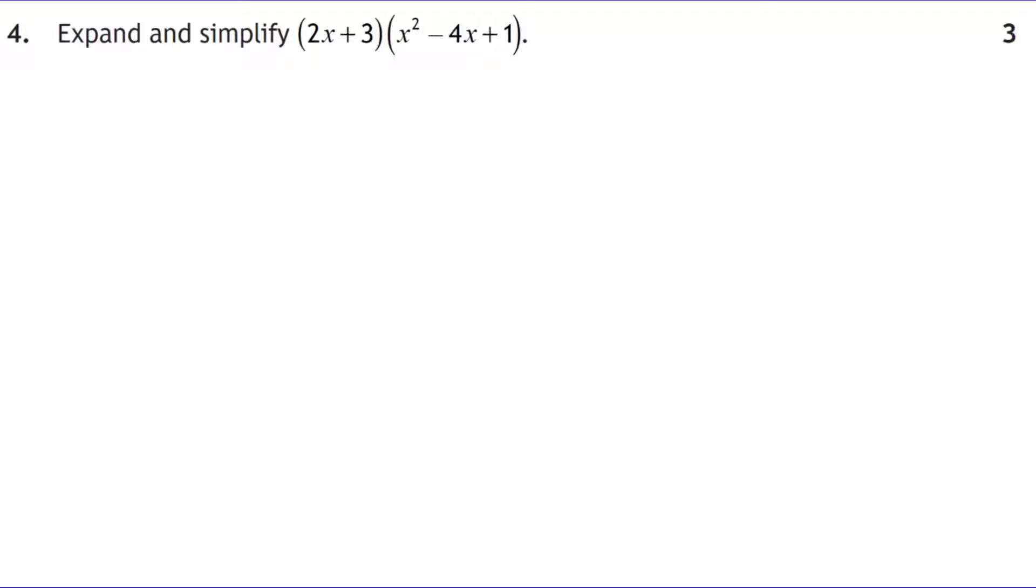Question 4. Expand and simplify. So we get 2x multiplying the whole bracket, then 3 multiplying the whole bracket. 2x times x squared is 2x cubed. 2x times negative 4x is negative 8x squared. 2x times 1 is plus 2x. 3 times x squared is plus 3x squared. 3 times negative 4x is negative 12x. And 3 times 1 is plus 3. We now have to collect like terms. We've only got one cubed term, that's the 2x cubed. We've got negative 8x squared and plus 3x squared, which gives negative 5x squared. The x terms, we've got plus 2x and minus 12x, so that's going to be minus 10x altogether. And then the number term at the end to finish off.